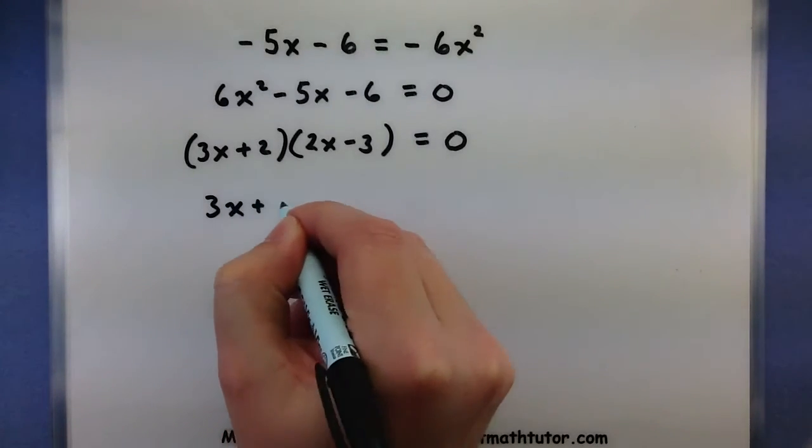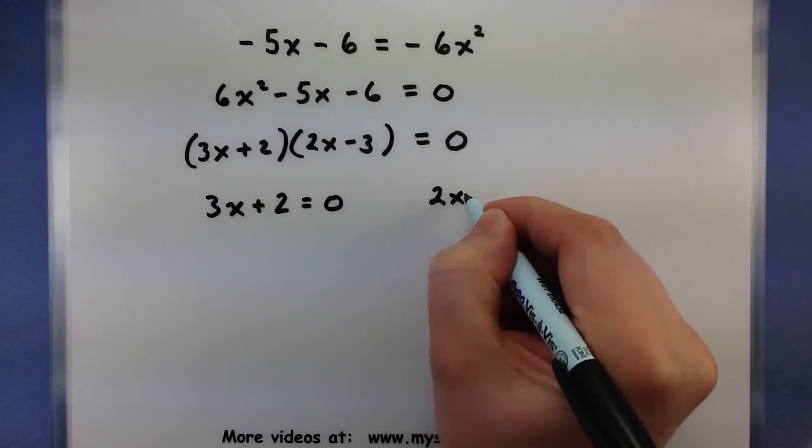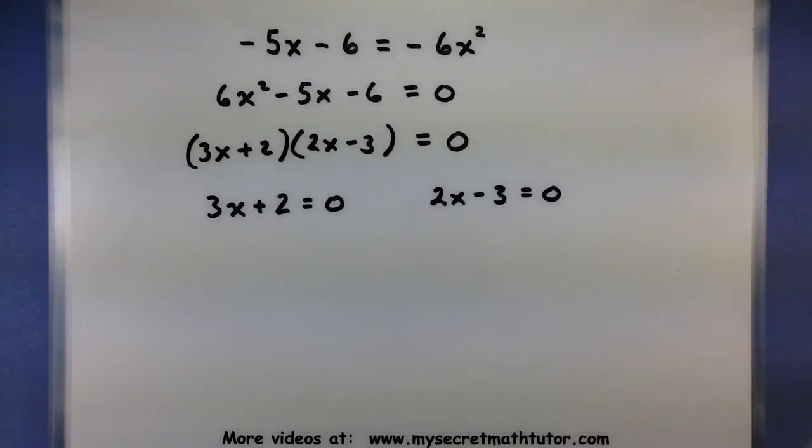Now we want to take each of these factors and set them equal to 0. Awesome. Look at that. All right. Now from here, we solve the much simpler equations, see what we get for x.